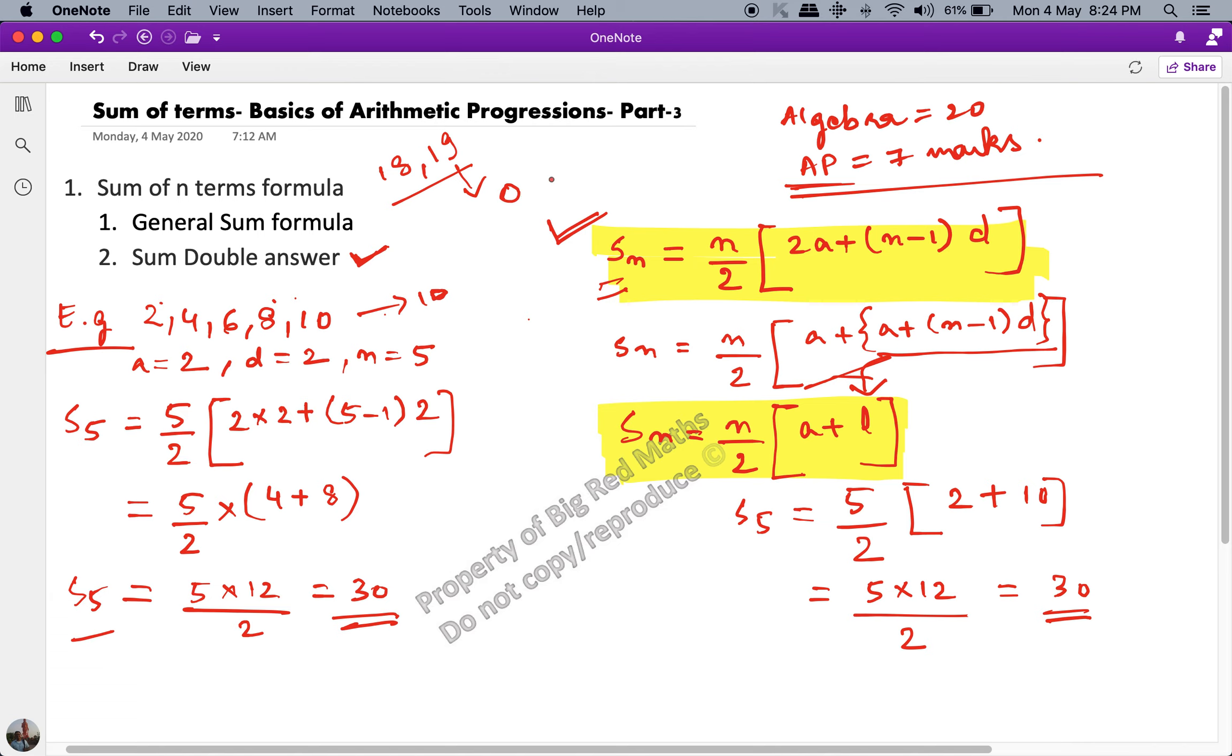Or sometimes also what happens is that in a reducing arithmetic progression, there are some terms which are positive and some terms which are negative. So you may get something like the sum of 12 terms and the sum of 15 terms of the AP is the same. Sometimes you get these kind of answers.